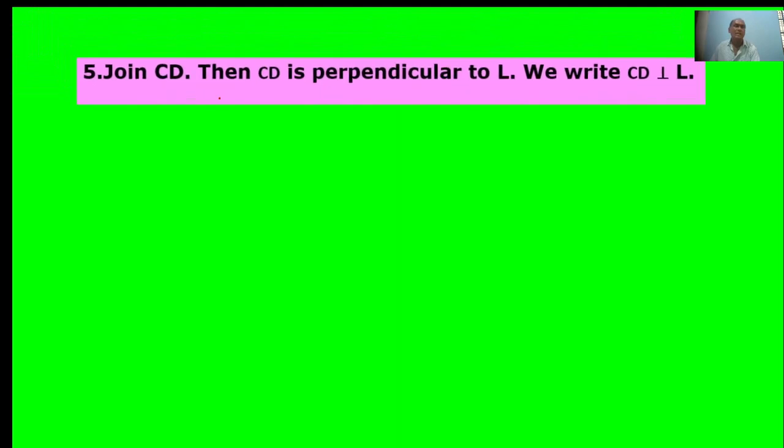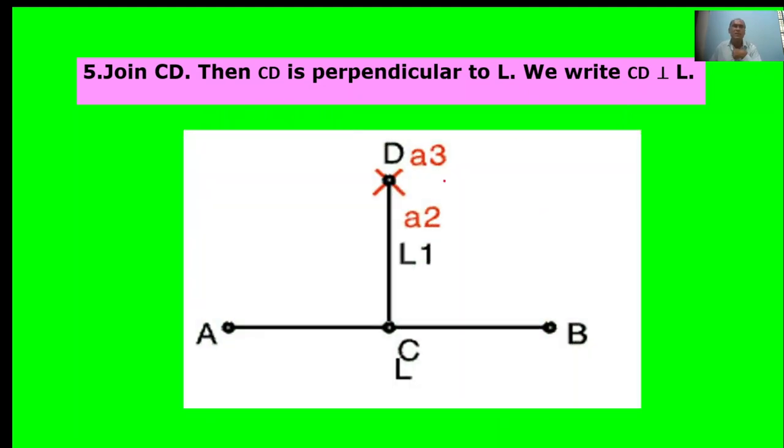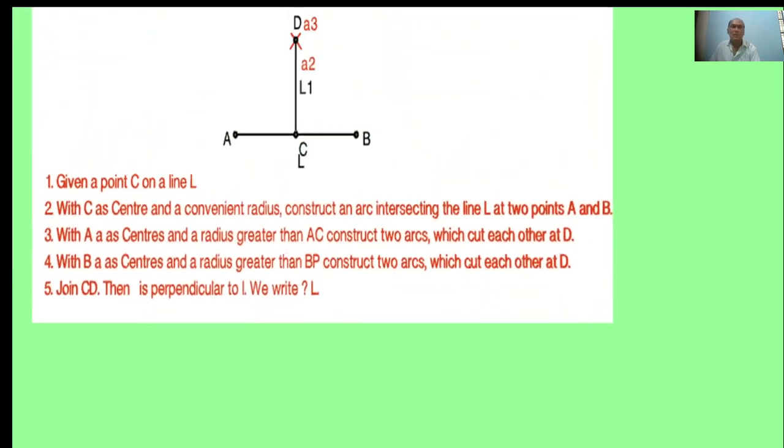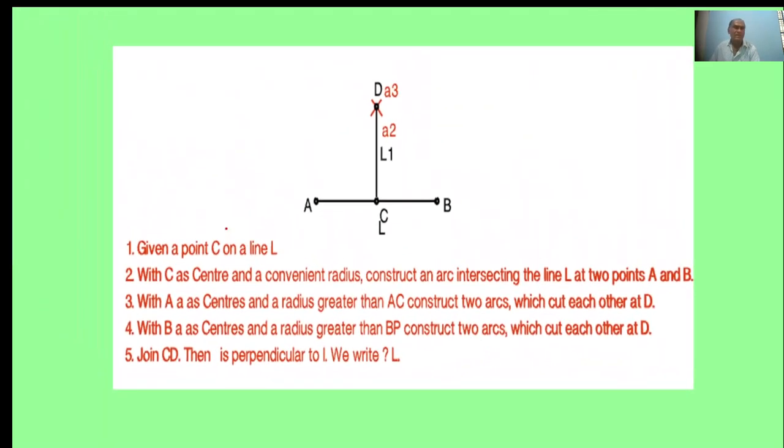Join CD. Then CD is perpendicular to L. Here, D is the intersect point. Join CD. CD is perpendicular to L. The perpendicular line construction steps are given. Five steps are there. You observe that.